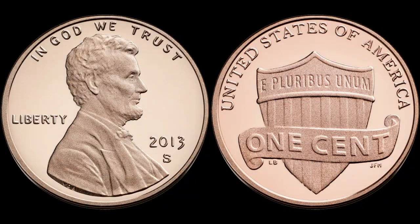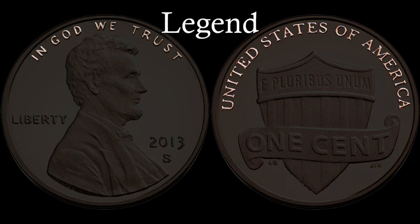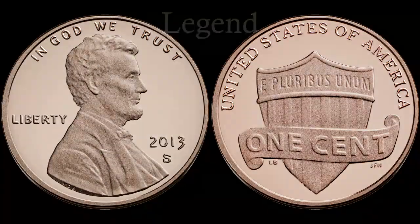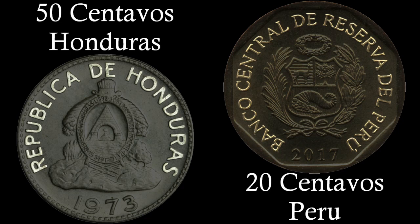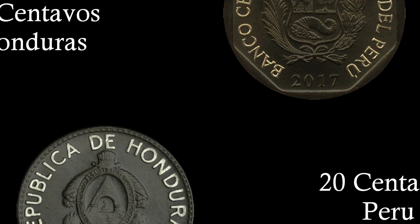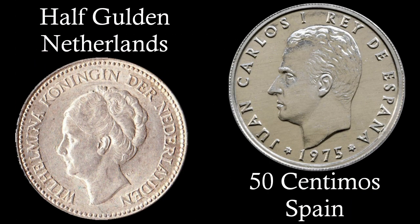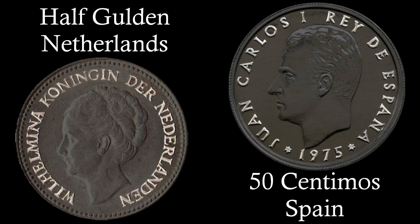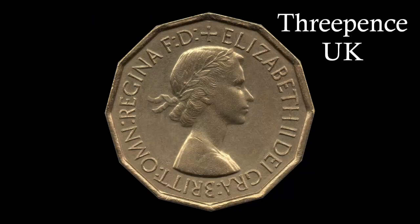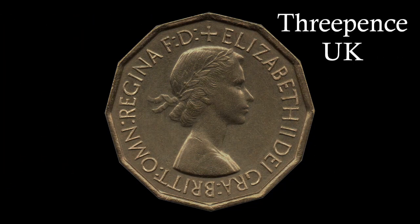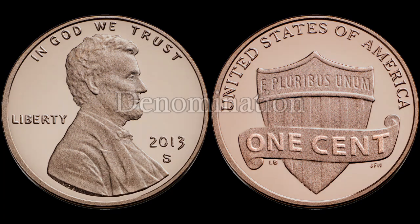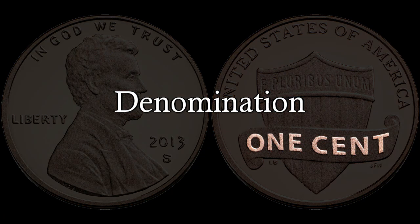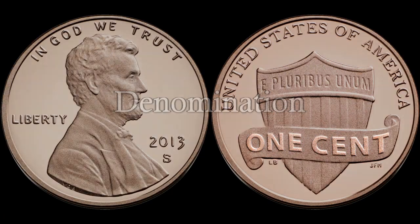The primary inscriptions on a coin are known as legends, and are typically inscribed along the outer edge of the coin. Legends can take nearly any form, but for most coins it's the name of the country or issuing bank. For many monarchies, the name of the current ruling monarch is also part of the legend. In the case of the United Kingdom, however, the name of the country is not mentioned. Almost all modern coins will have the denomination as one of its inscriptions, usually on the reverse.